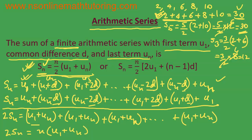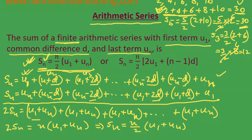This gives us the formula: Sn = n/2 × (u1 + un) — the sum of the first n terms of a finite arithmetic series. This is exactly the formula that was given to us.